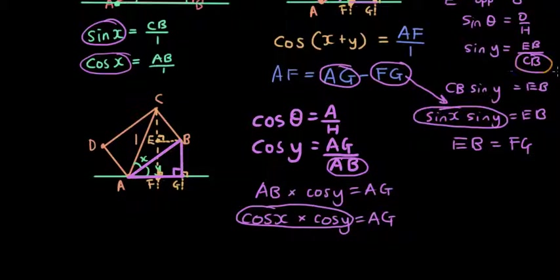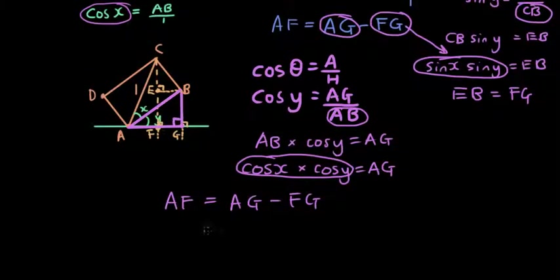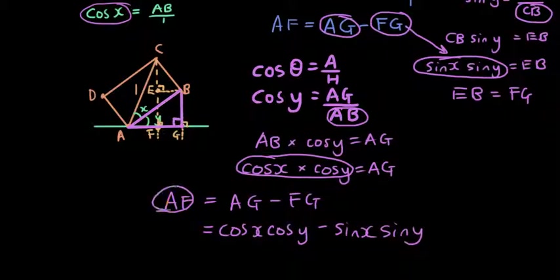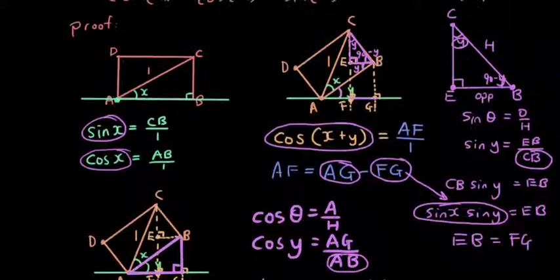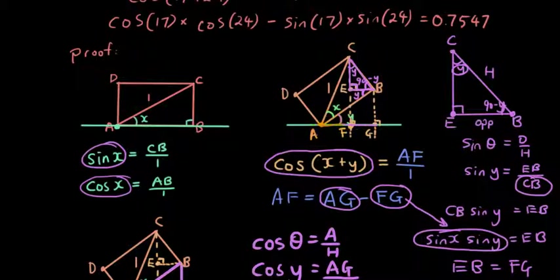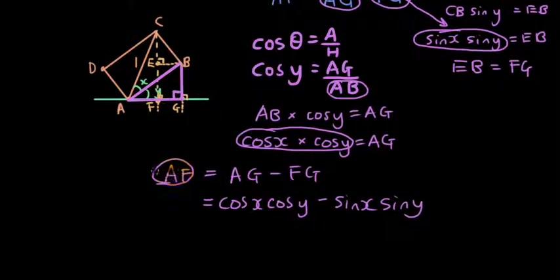So I'm going to write AF is equal to AG minus FG, which is the same as cos x cos y minus sin x sin y. And since AF is the same as cos(x + y) as I've proven to you earlier, the length AF is cos(x + y). So I have cos(x + y) is equal to all of that.